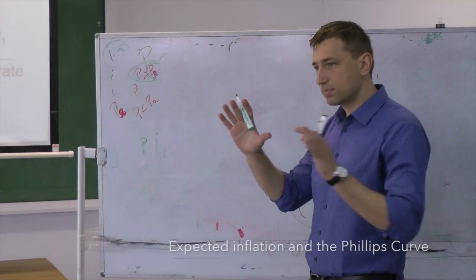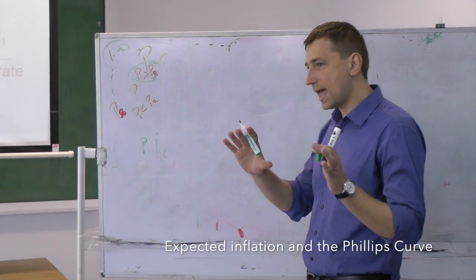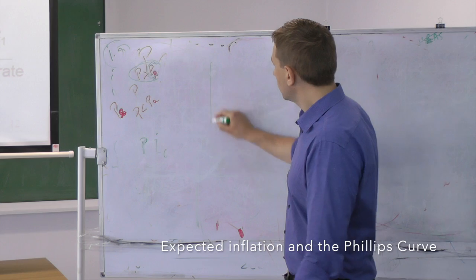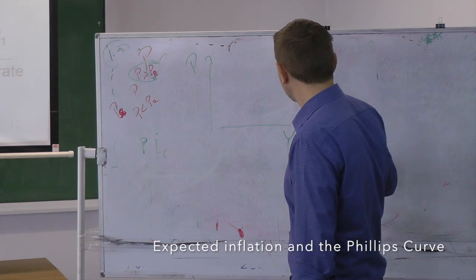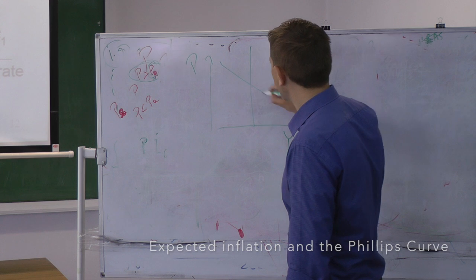The link between expected inflation and the Phillips curve. We start with the aggregate demand, aggregate supply model, which looks like this.